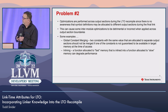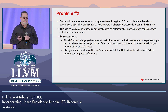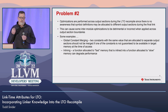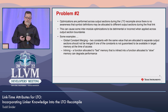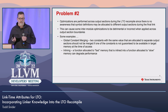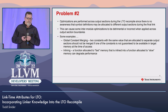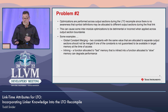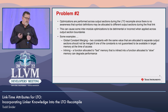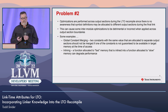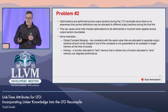Problem number two: he observes that optimizations are performed across output sections, and this can cause some inter-module optimization to be detrimental or even incorrect when applied across output section boundaries. For example, constant merging has a potential correctness issue — if you take two constants with the same value allocated to separate output sections, these should not be merged if one constant is not guaranteed to be available in target memory at the time of access. A performance issue with function inlining occurs if a function allocated to fast memory is inlined into a function allocated to slow memory, degrading performance.